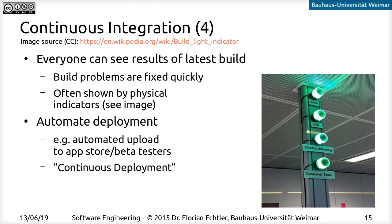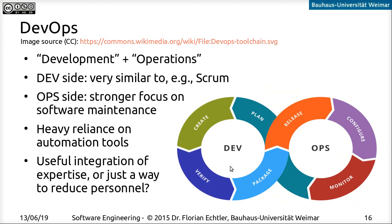There's another slightly more recent term called DevOps, which is also in the widest sense an agile method. DevOps is a combination of development and operations. The development side is quite similar to Scrum: you have a planning phase, a development phase, a verification and testing phase, and a deployment phase. The operations side then focuses more on maintenance and running the software — you release it, keep it running, monitor it, and that information informs the next planning phase.